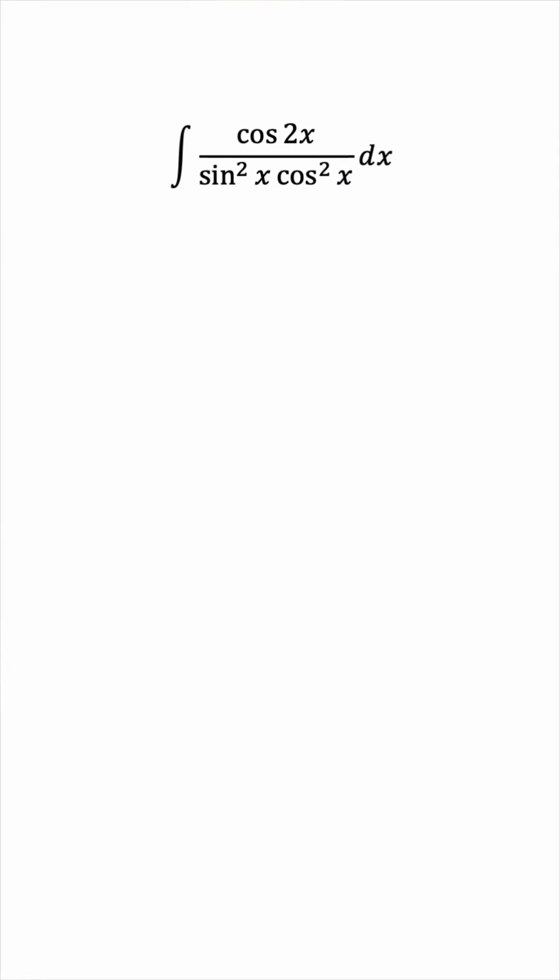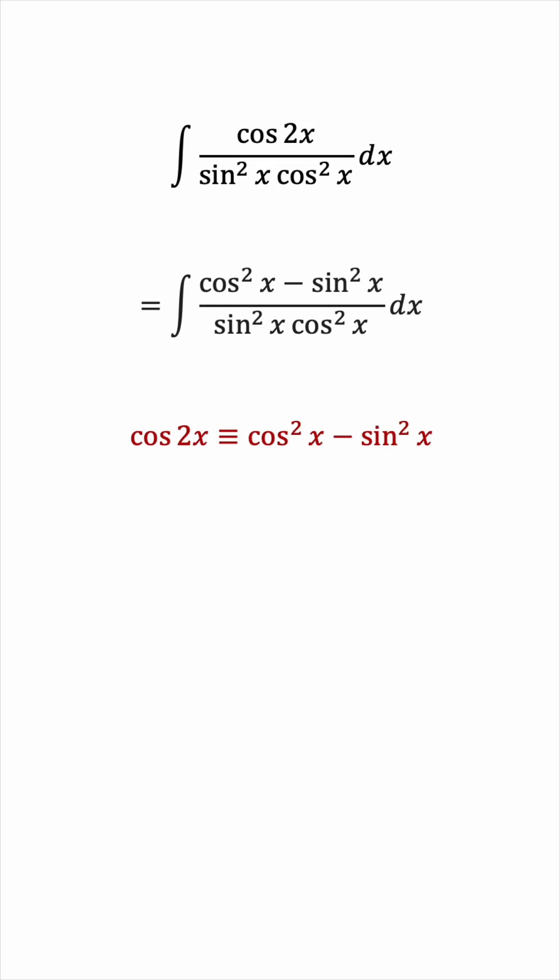Perhaps the easiest way to solve this is to use the double angle identity for cosine, at least one of its forms. If we replace the numerator with this, then the input is now x everywhere.